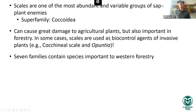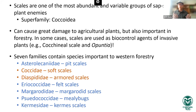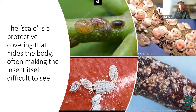There are seven families important to forestry in western North America: Asterolecaniidae (pit scales), Coccidae (soft scales), Diaspididae (armored scales), Eriococcidae (felt scales), Margarodidae (margarodid scales), Pseudococcidae (mealybugs), and Kermiidae (kermes scales). The two most important in pest management are the Coccidae — soft scales — and the Diaspididae — armored scales. Distinguishing between these two types of scales, their life histories, and their control options is the main focus today.